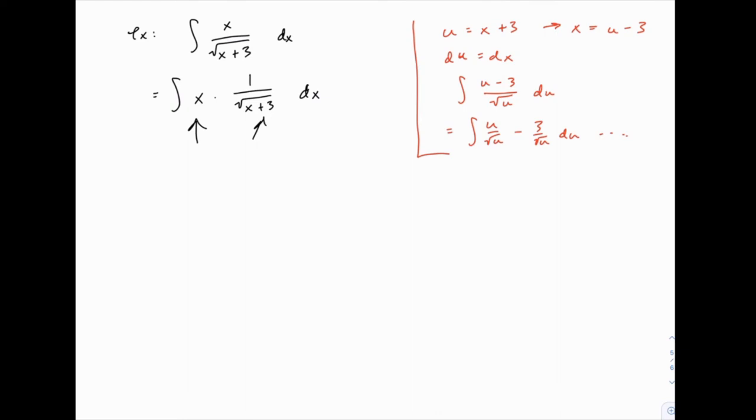And you want to think about which is going to simplify things. So if we select x to be u, when we find du, things will simplify dramatically. In other words, that x will vanish when we take its derivative. If we chose things the other way, if we selected 1 over the square root of x plus 3 to be our u, when we found du, it would actually get more complicated and none of the x's would go away.